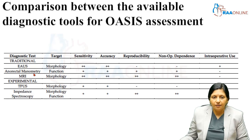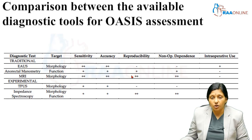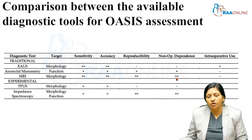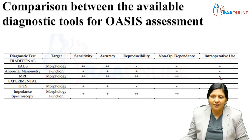Anorectal manometry assesses the function of the anal sphincter. It has good sensitivity and accuracy. It is also reproducible and non-operator dependent, but it cannot be used in the operation theater. MRI also looks at the morphology of the anal sphincter. It has good sensitivity, good accuracy, and good reproducibility. It is also non-operator dependent, but it cannot be used in the operation theater.